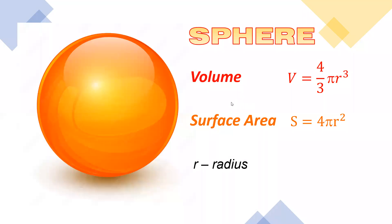To get the volume of a sphere, we have the equation V equals 4 over 3 multiplied by pi r cubed. And the surface area is S equals 4 pi r squared, where r is the radius.